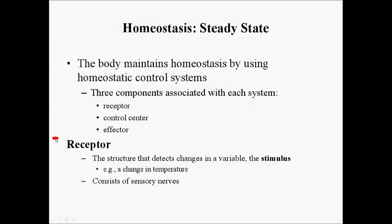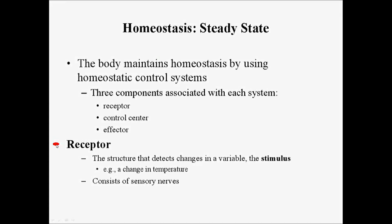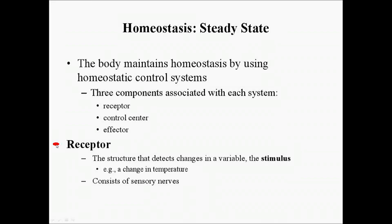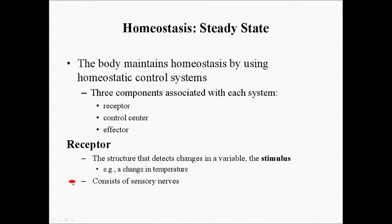The receptor is a structure that will detect a change in a variable. This variable can be either external to the body or internal. For example, we could have a change in temperature. If you walk outside and it's colder, that change in temperature would be the stimulus, and the body senses this by using sensory nerves.